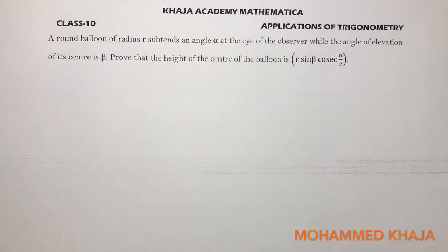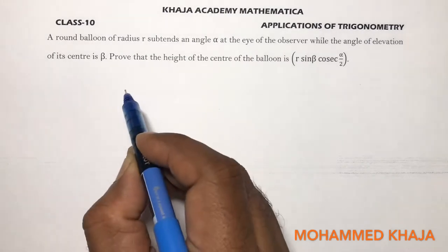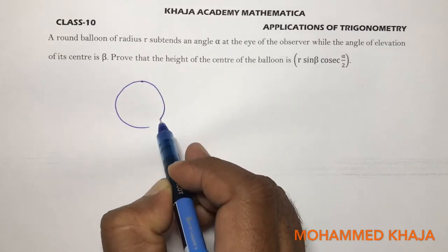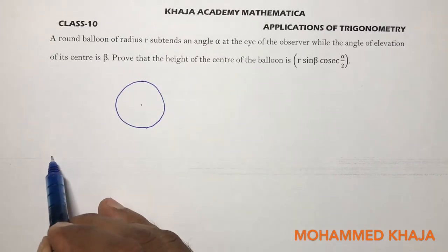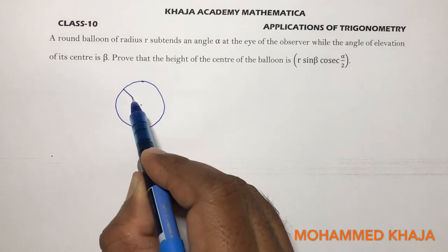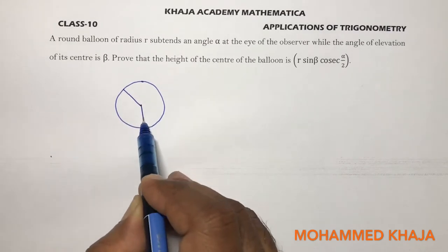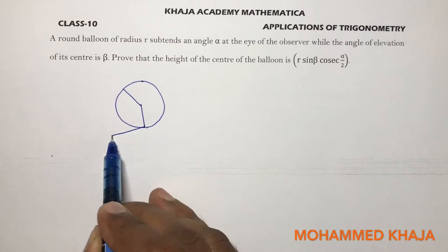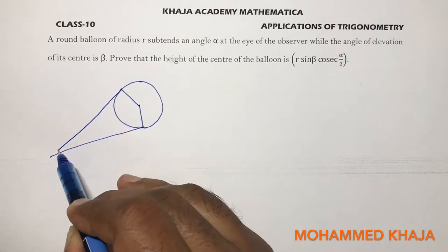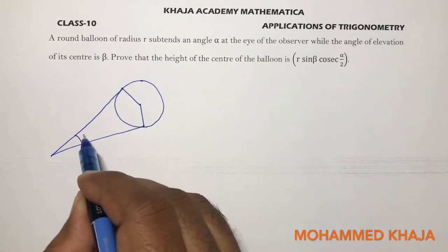Class 10 important problem from applications of trigonometry. A round balloon of radius r subtends an angle alpha at the eye of the observer. Here I'll take a round balloon of radius r. If I take the observer here, this balloon subtends an angle alpha at the eye of the observer, so this angle is alpha.